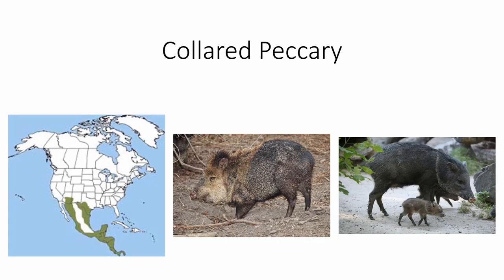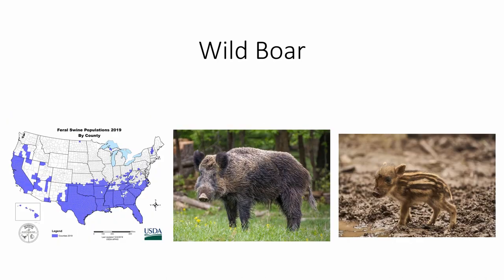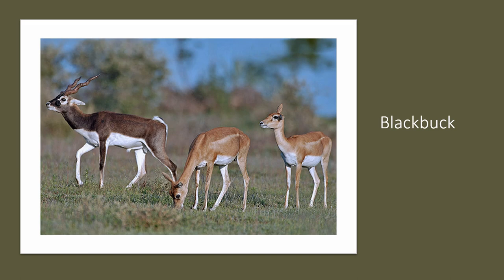The collared peccary is actually not a type of pig, though it looks a lot like one — it's in a separate family. It's found in southern Texas, Arizona, and a bit of New Mexico. It's identifiable from wild boars by the fact that it has no tail and has a pale collar of fur around its neck. The wild boar is an introduced species from Eurasia, which has now spread across the southern United States and California. It's larger than the collared peccary, with a long tail and large ears, and its young are striped.